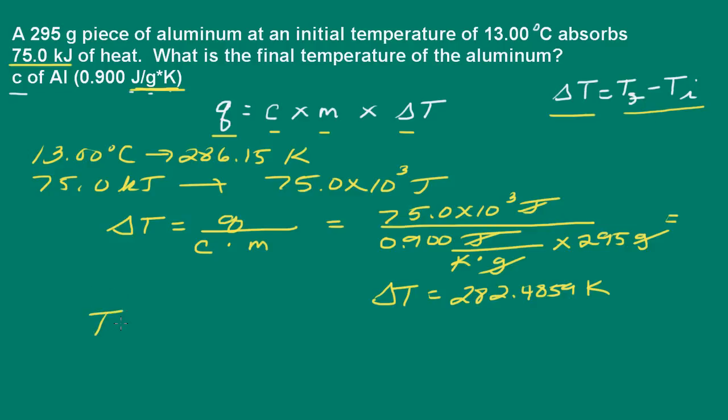So the final temperature then is going to be equal to delta T plus the initial temperature. Now, recall in this first part here, we went ahead and converted the temperature to Kelvin, but we really didn't need to do that because, remember, delta T here, we have it as 282.4859 Kelvin.